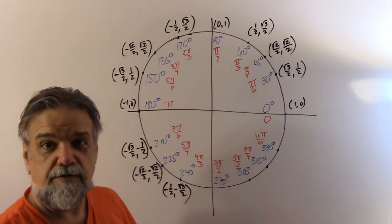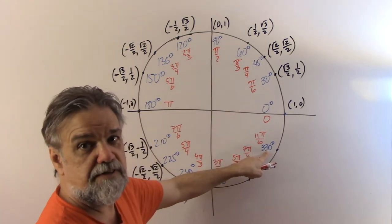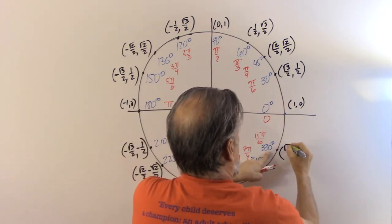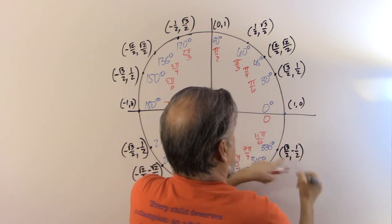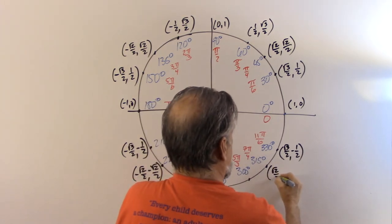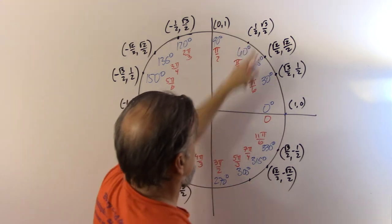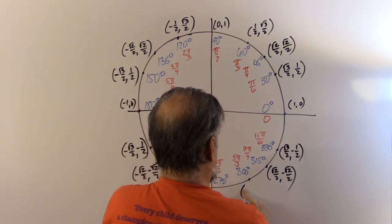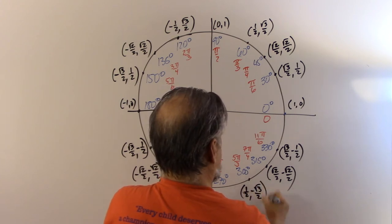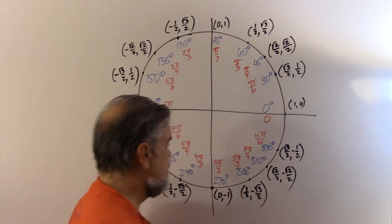At 225° this will be (-√2/2, -√2/2) — we're in quadrant 3, so all of our sines and cosines are negative. And 240° will be (-1/2, -√3/2). Getting into quadrant 4: 330° I think of as negative 30°, so this is going to be (√3/2, -1/2) — positive cosine, negative sine. 315° is negative 45°, giving (√2/2, -√2/2). 300° is negative 60°, giving (1/2, -√3/2). And at 270° we have the point (0, -1).